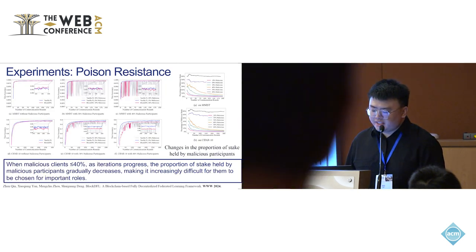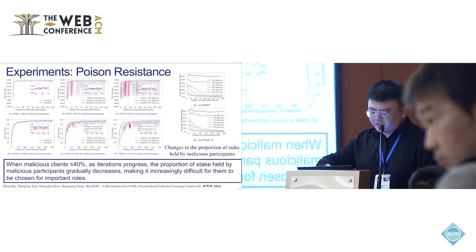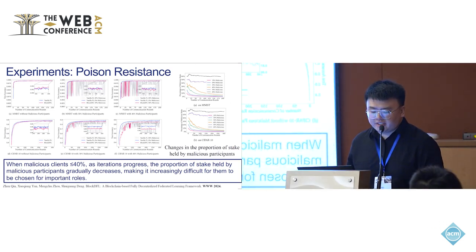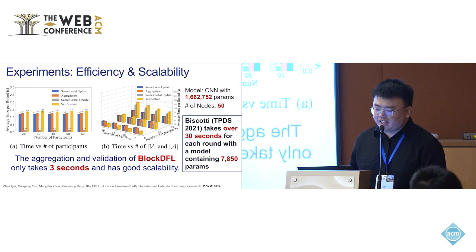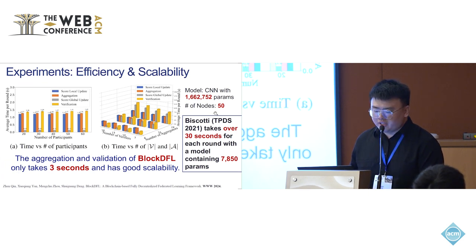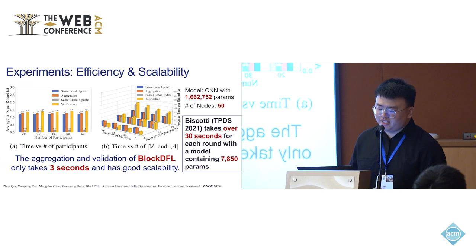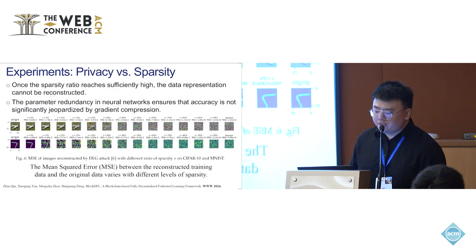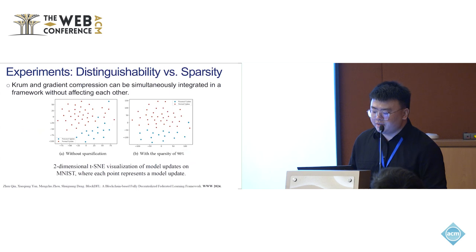We also found that when malicious clients are less than 40%, as iterations progress, the proportion of stake held by malicious participants gradually decreases, making it increasingly difficult for them to be chosen for important roles. BlockDFL is very efficient — aggregation and validation only takes 3 seconds per round, with good scalability. In comparison, a peer framework Biscotti takes over 30 seconds per round with a model containing only about 7,000 parameters. We also found that once the sparsity ratio reaches a sufficiently high level, data representation cannot be reconstructed, and the Chrome and gradient compression can be simultaneously integrated without affecting each other.